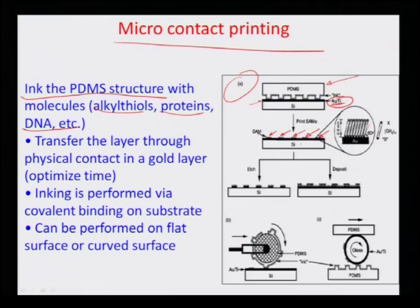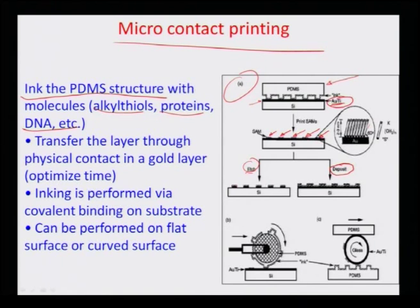You can selectively etch or deposit on this layer. In one case, the gold film is etched off where the SAMs are not sticking, so the SAMs act as an etch protective layer and the remaining gold is exposed to an etchant. The etchant does not affect the gold under the SAM, wherever the SAM is present it gets protected — leaving heaps of gold protected by SAMs with the exposed gold removed.